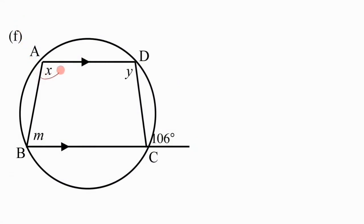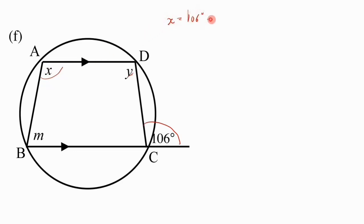For part f, we need to find x, y, and m. Finding x is straightforward — we have an exterior angle of 106 degrees and it should equal the opposite interior angle, so x equals 106 degrees — exterior angle of cyclic quad.